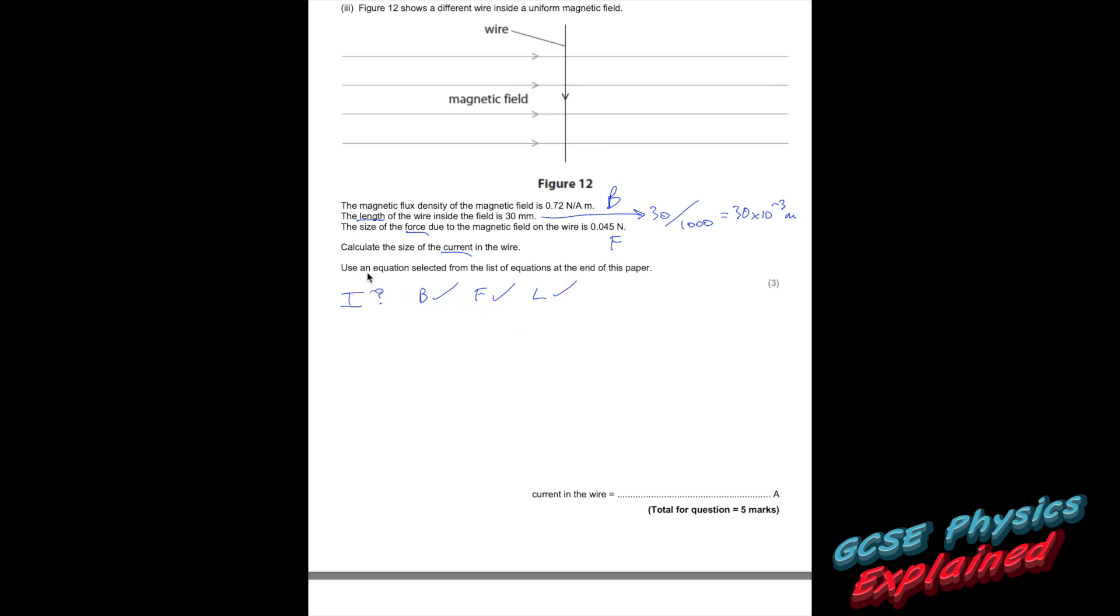Is there an equation connecting those things? Yes there is, it says use the equation selected from the list at the back, it's F equals BIL. Magnetic field or magnetic flux times by the current times by the length. Let's rearrange it to get the current. If you don't know how to rearrange the equations, have a look at my video called Magic Triangle, I'll put the link at the top of the video now. Put the numbers in. Because this unit appears in meters, which it always will be, that's the giveaway that you couldn't just leave the length in millimeters. And that equals 2.08.